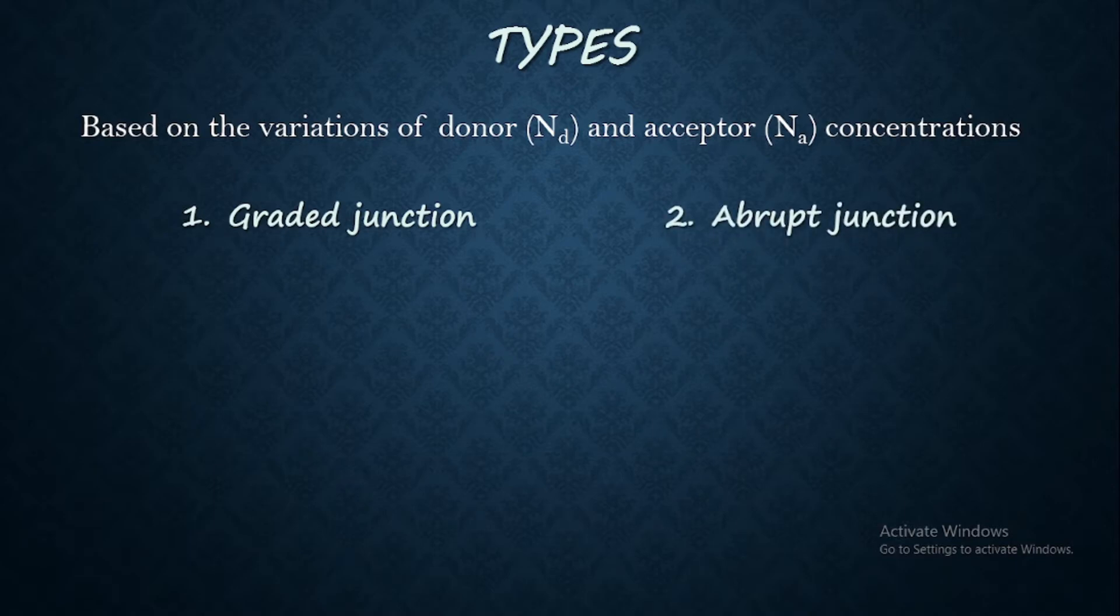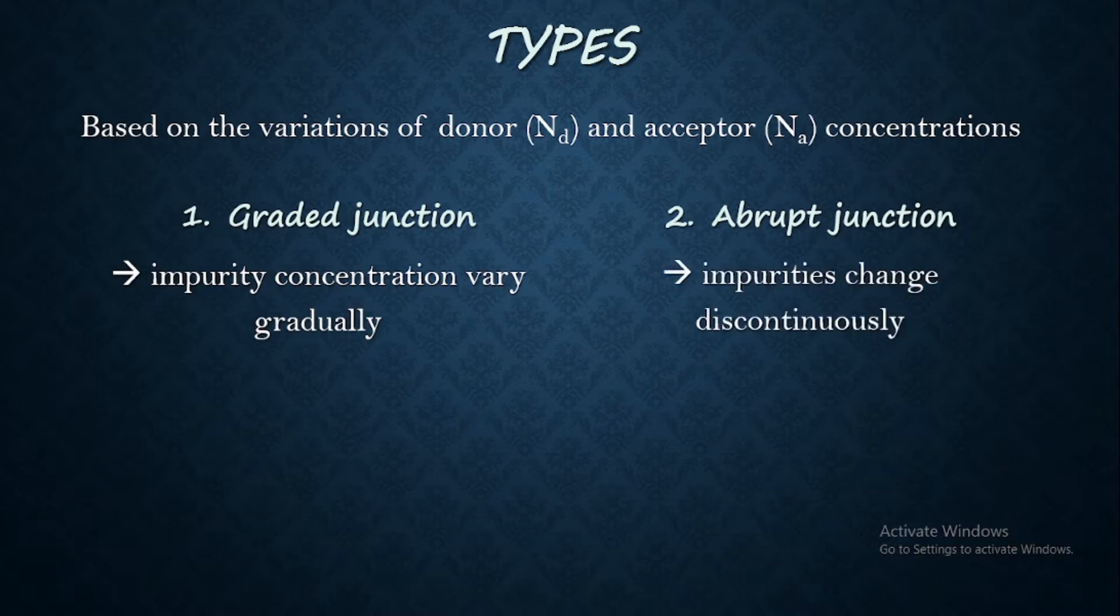So here we can say that graded means gradual, abrupt means sudden. So in graded junction, the impurity concentration will vary gradually whereas in abrupt junction, the impurities change discontinuously. That is, the change in impurity is not gradual.